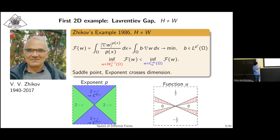For density, one can look at a function constructed like this. It is constant here and minus this constant here, connected by some linear or smooth transition. It is from W, but cannot be approximated by smooth functions. Why?